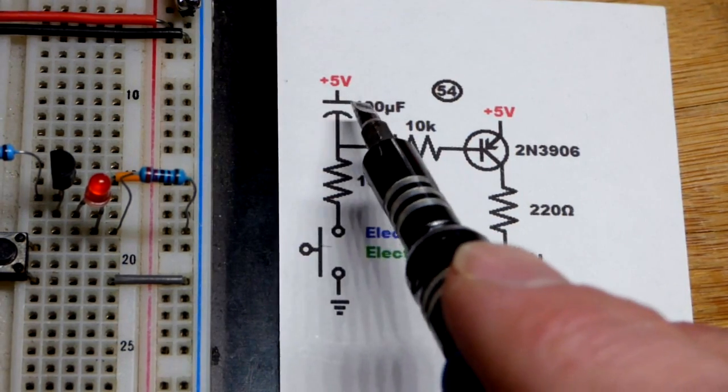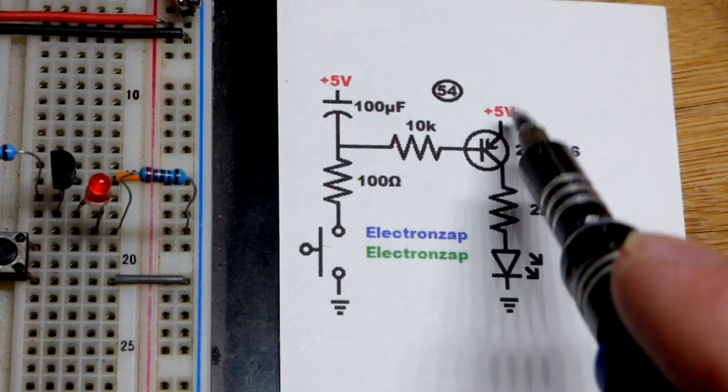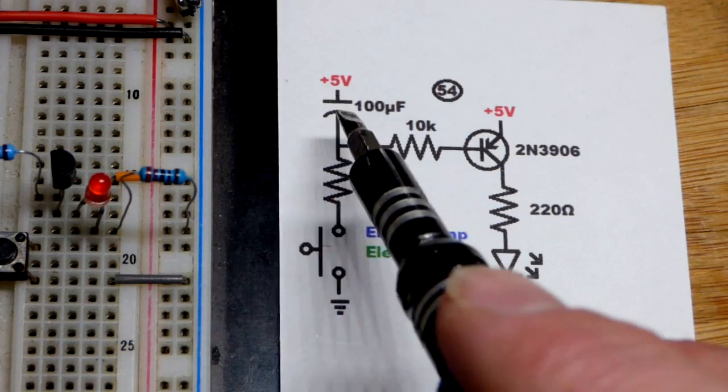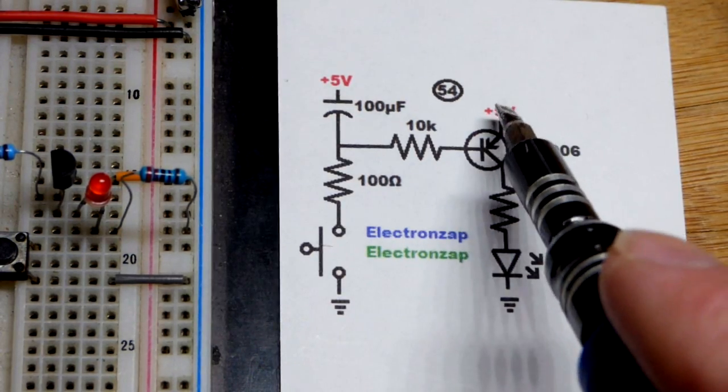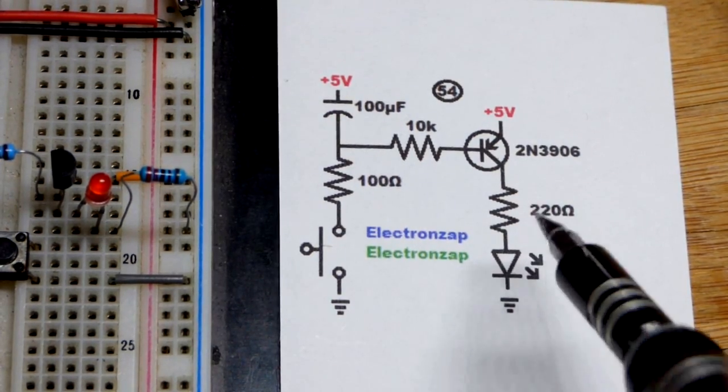When it's discharged and the switch is open, there's no emitter to base current going anywhere, and thus no emitter to collector current. The LED is off.